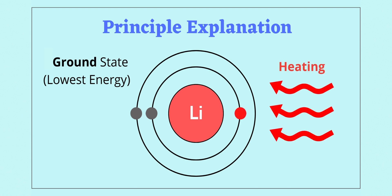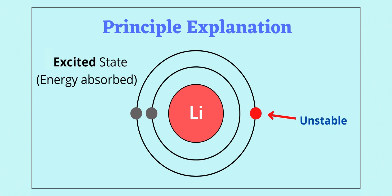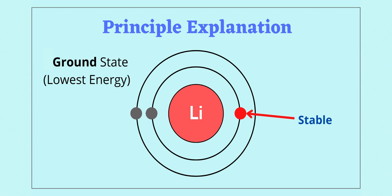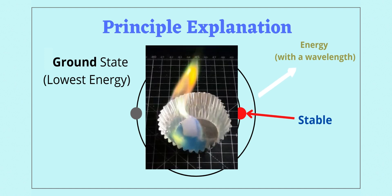But when heated, the electrons absorb energy, move to the outer electron shell, and become unstable. However, in this excited state, the atom tries to return back to the stable ground state. At this time, energy with a wavelength in the visible light region is emitted from the elements, so that we can observe a unique flame color for each element.